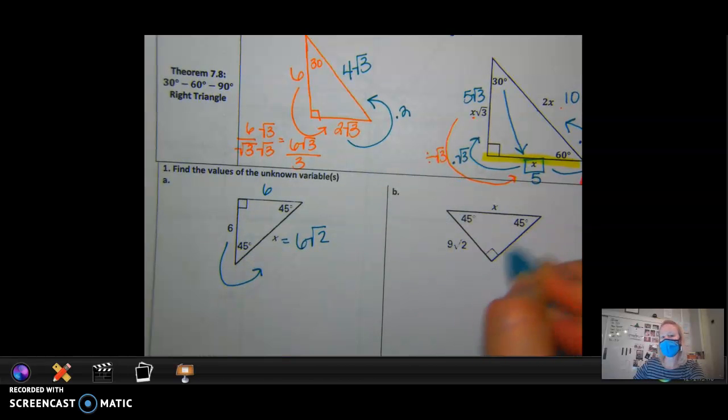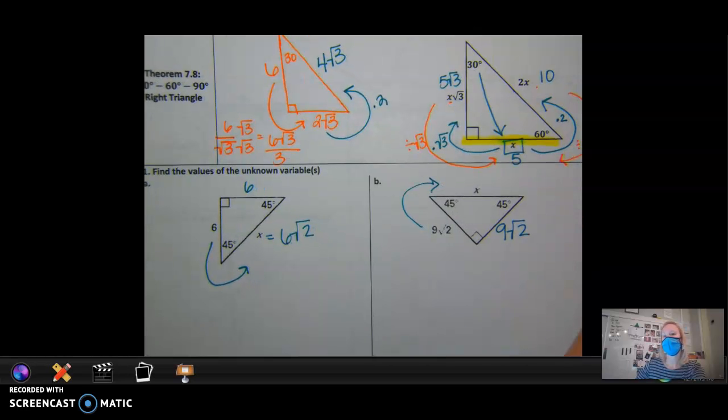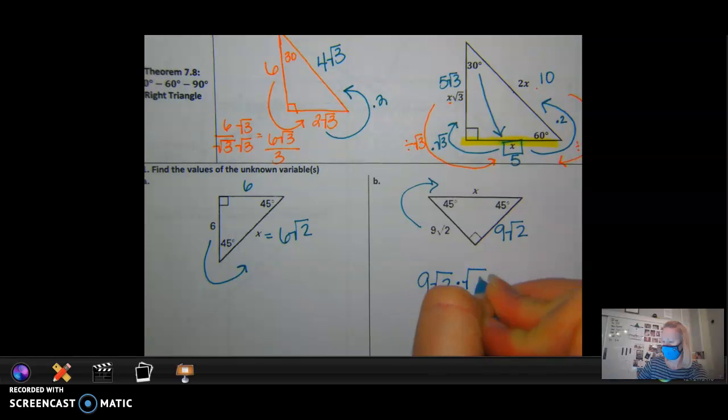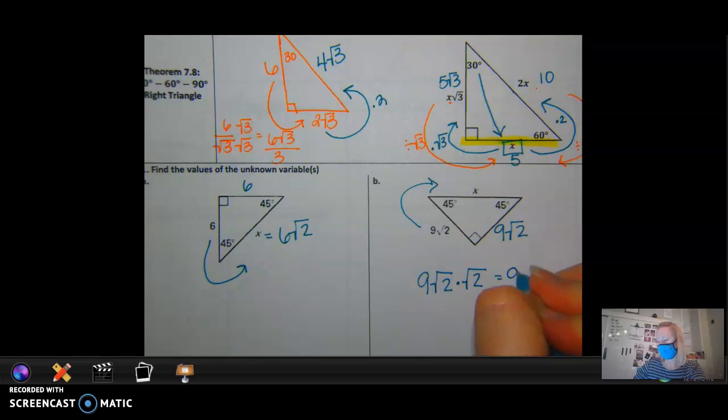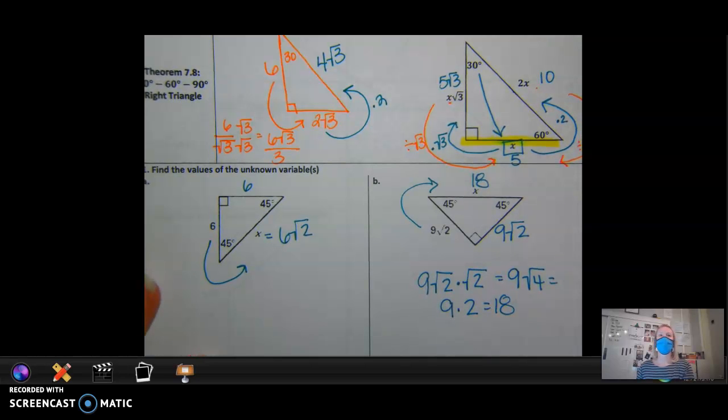Next one. It didn't ask for me to say this side, but what would this side be? Good. And then how do I go to this side? What do I do to 9 square roots of 2 to get to the hypotenuse, guys? Good. So what is 9 square roots of 2 times the square root of 2? Right. 9 square roots of 4, right? Which is 9 times 2, which equals 18. Any questions on those two?